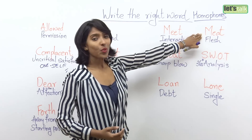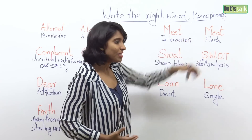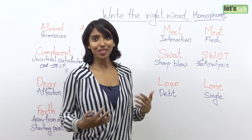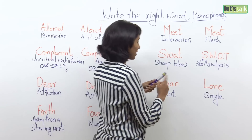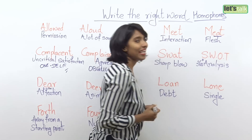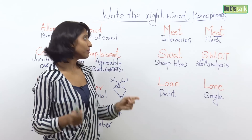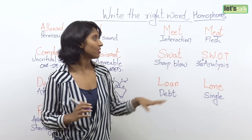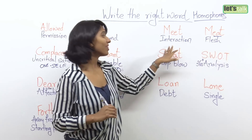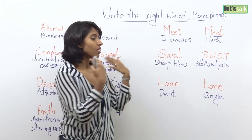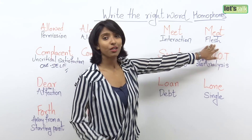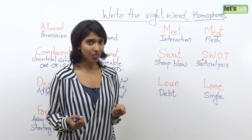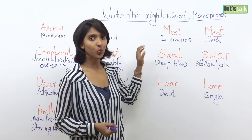However, the other word is 'meat,' which means the flesh of an animal. So you cannot say 'I want to meat you' if you're using A instead of E. Please be careful — EE and EA both sound like E. So meet versus meat: meet means coming into someone's presence, meat means the flesh of an animal or mammal.